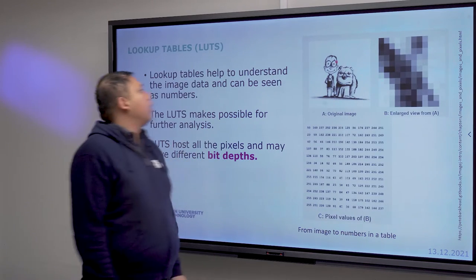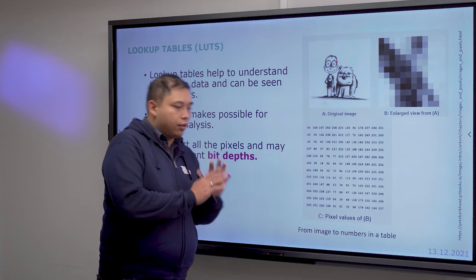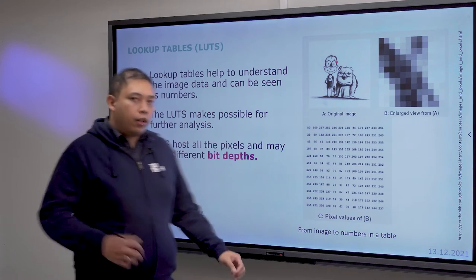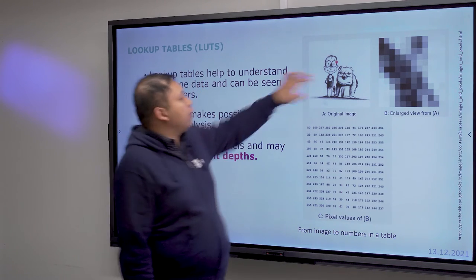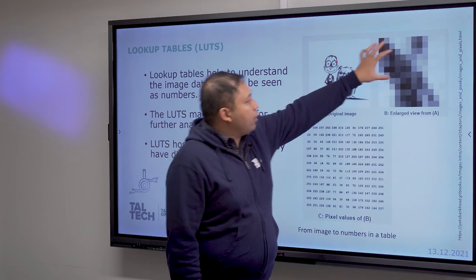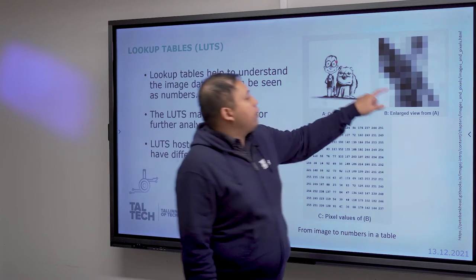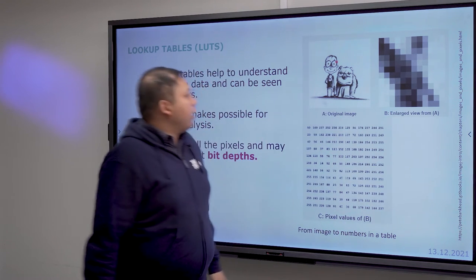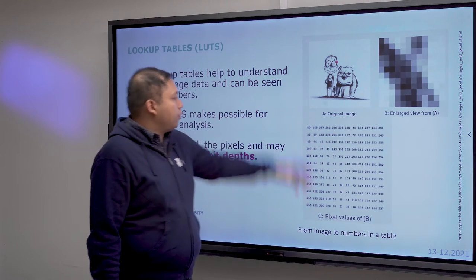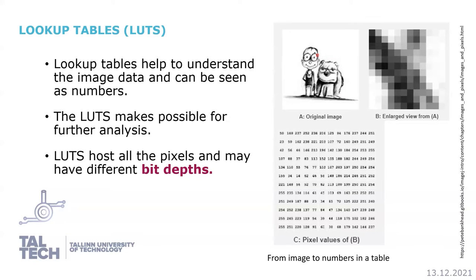An image basically consists of many many pixels. To differentiate one pixel from another, you can take a tiny image, zoom in, and see the enlarged view showing different boxes — the individual pixels. From there, we utilize them by transforming the pixels into numbers and putting them into lookup tables.